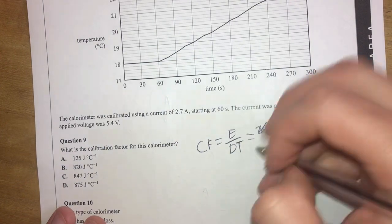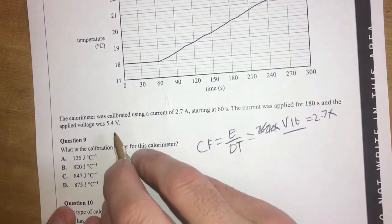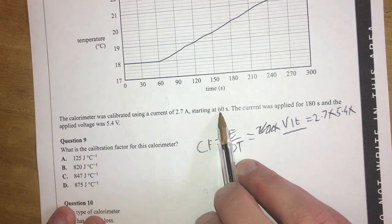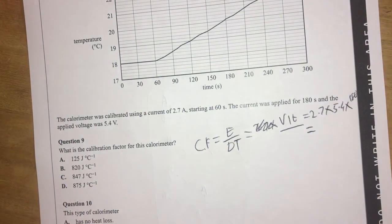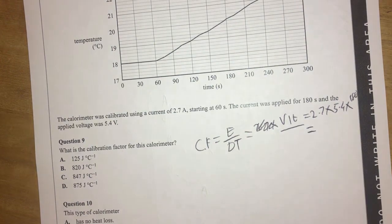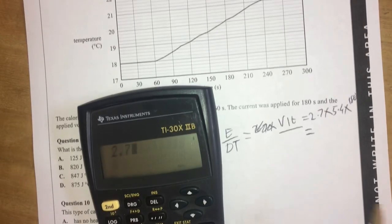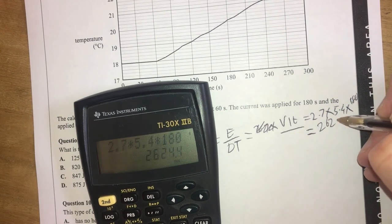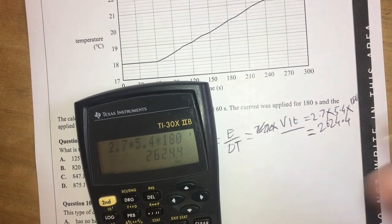Equals VIT. That's good. Yeah. So it is 2.7 amps times my voltage of 5.4. Now, times... What's my time? It started at 60 seconds. It went for 180 seconds, so times 180. So that energy is going to be... Where is my trusty calculator when I need it? Let's find that. Here it is. Two point 7 times 5.4 times 180 equals 2,624.4.